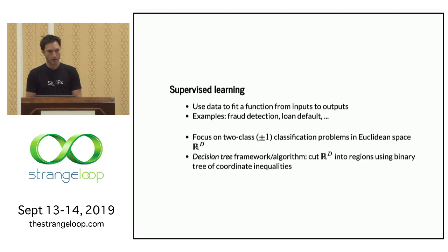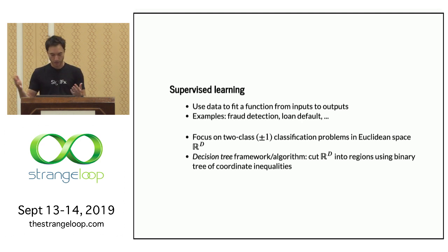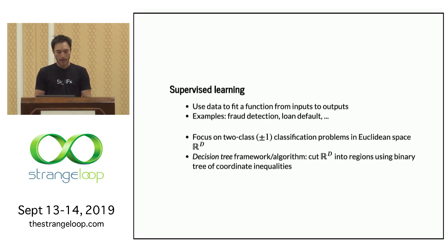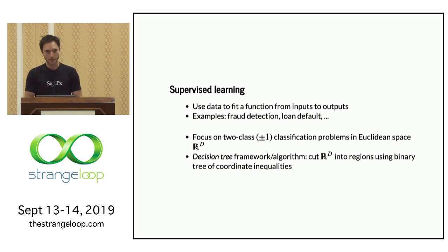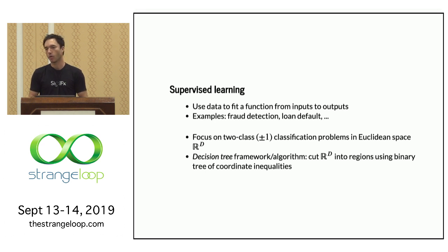For simplicity I'll focus on the two-class classification problem, where the output is discrete or categorical rather than continuous, and we'll assume the input space is a D-dimensional Euclidean space. I will further focus on algorithms that use as a base a decision tree. The basic idea of a decision tree is that you cut your Euclidean space into regions using a binary tree of coordinate inequalities.